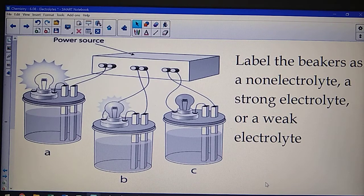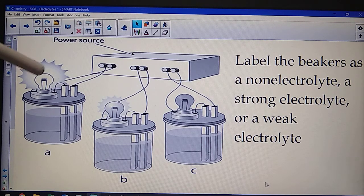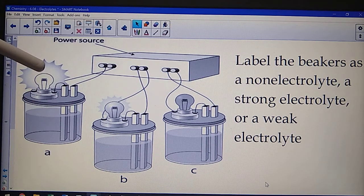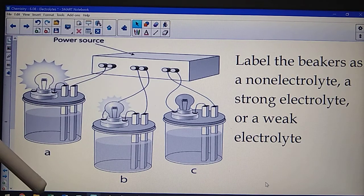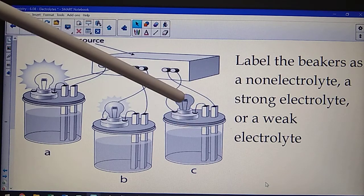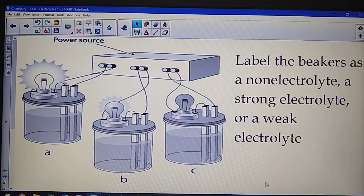Let's say that I have here three beakers filled with solutions connected to a power source. I'd like you to label each of the beakers, A, B, and C, as a non-electrolyte, a strong electrolyte, or a weak electrolyte. So in beaker A here, I have current running through, and I get a very bright light. With B, current goes through, and I have a very dim light, but I do see light. And in C, current is running through it, but there is no light being given off at all. So in A, it's bright. In B, it's dim. In C, it's not lit at all. Now, let's assume that all the beakers contain the same concentration. Label them as a non-electrolyte, strong electrolyte, or weak electrolyte. Pause the video and consider your answers.